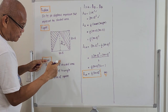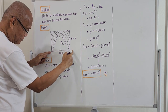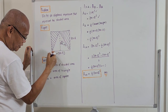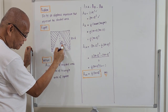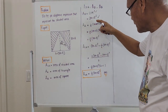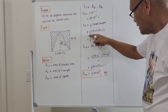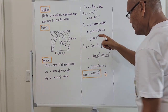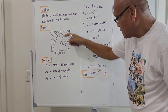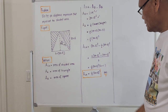The total base of the triangle goes from this point here to this point, so the total base is (8x − 5). The height is also (8x − 5). So the area of the triangle is one half times the base (8x − 5) times the height (8x − 5).